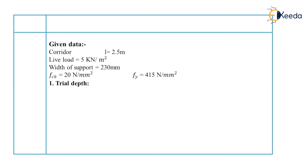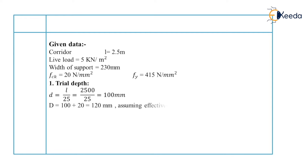Our first step is to find out the trial depth. As a simply supported slab is given, we consider D equal to L upon 20 into modification factor, or we can directly take L upon 25. So D equals 2500 mm divided by 25, which equals 100 mm. We assume an effective cover of 20 mm. Therefore, overall depth D equals 100 plus 20, which is 120 mm.